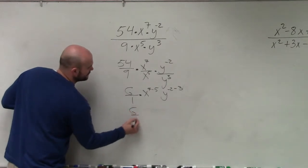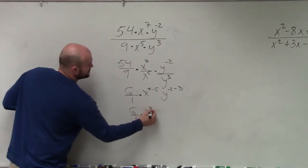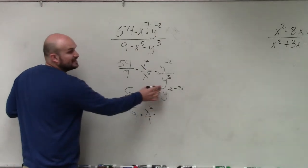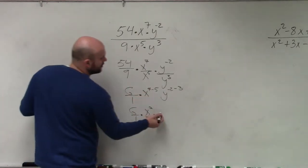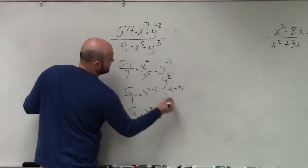So I have 6 over 1 times x squared, that's really over 1, times, if you owe me $2 and you borrow three more, that's y to the negative fifth.